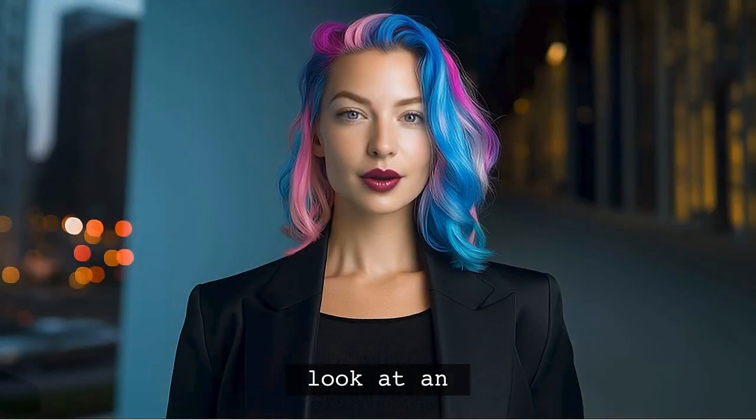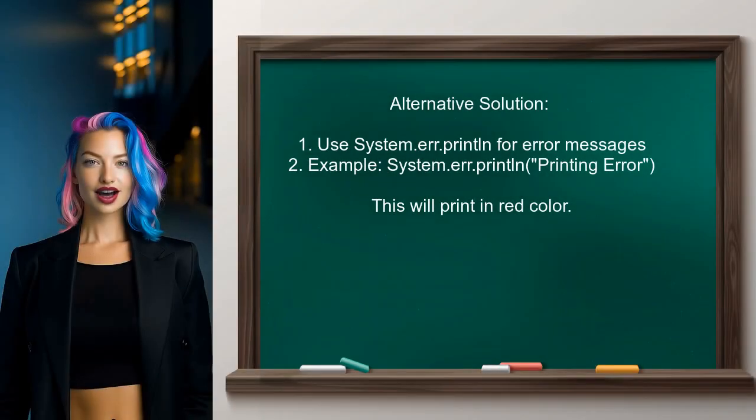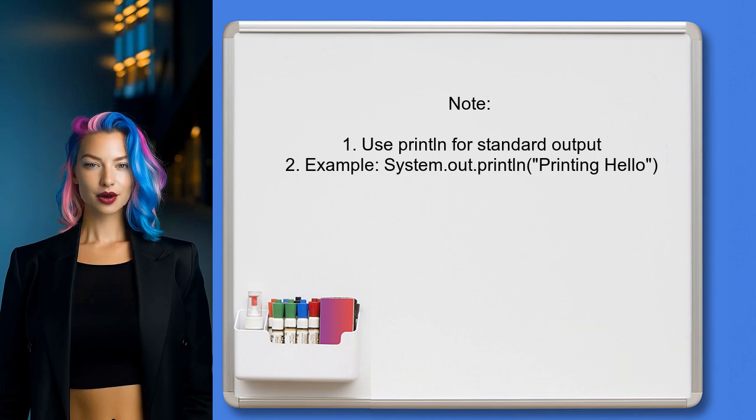Let's take a look at an answer from another user. An alternative approach suggested by a user is to directly use System.err for printing error messages in Kotlin. They recommend using System.err.println to send output to standard error, which will display the message in red color. In contrast, if you use println, it will send the output to standard output. For example, System.out.println will display the message normally.